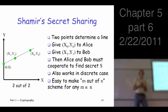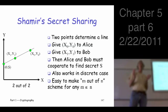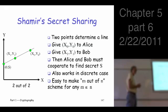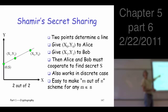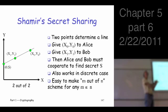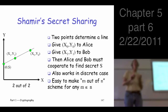Can we do something maybe a little more general? Can we have a system where any two out of three people need to get together to determine the secret? Add another point. So here's Alice, here's Bob, here's Charles - give him a point right here. Any one person still can't determine anything about the secret S, but any two of the three can get together and determine the secret S. We can do two out of anything - two out of three, two out of four, two out of five - just add a single line and get points on that line.